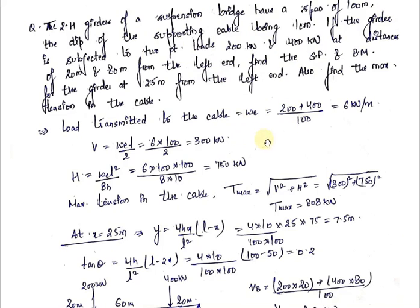First, we will convert the external loading into equivalent UDL. The equivalent UDL is equal to the summation of the point loads divided by the total span. So the summation of the point loads is 200 plus 400 = 600, divided by the total span of 100. This comes out to be 6 kN per meter.